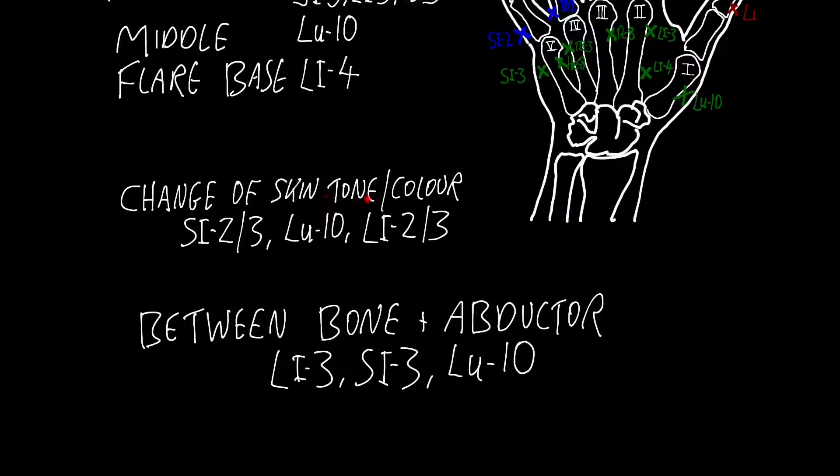At the change of skin tone and color we've got small intestine 2 and 3, lung 10, large intestine 2 and 3. Between the bone and the abductor muscles we've got large intestine 3, small intestine 3, and lung 10.